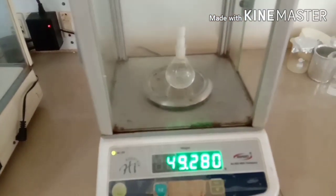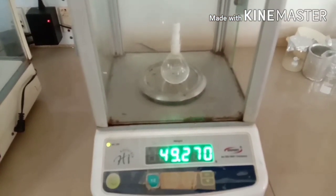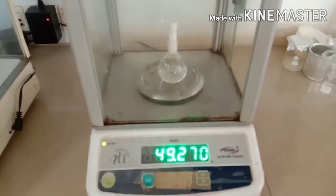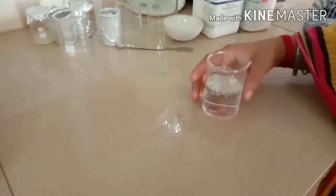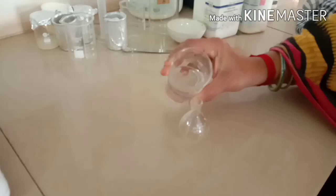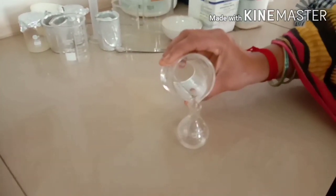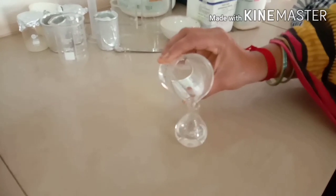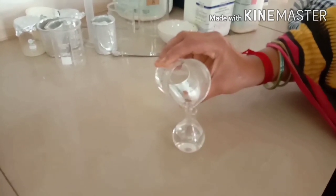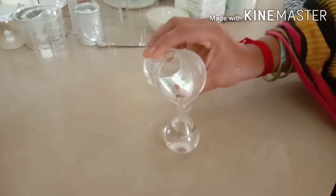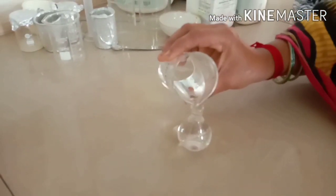Then wash with the unknown liquid. Then once again fill it with the unknown liquid and once again weigh, that is W3, weight with the unknown liquid. Then you calculate the density of water.